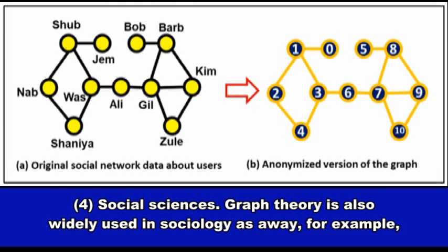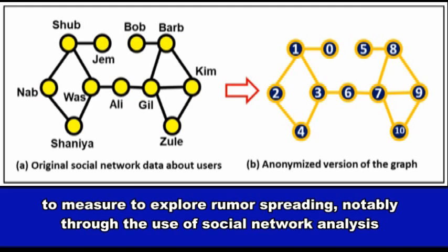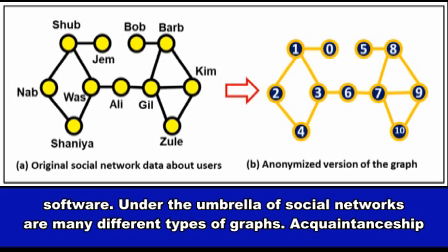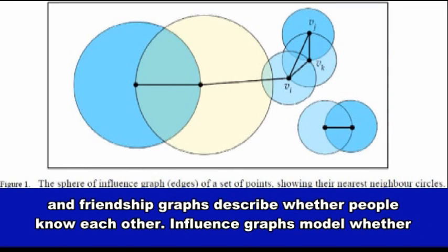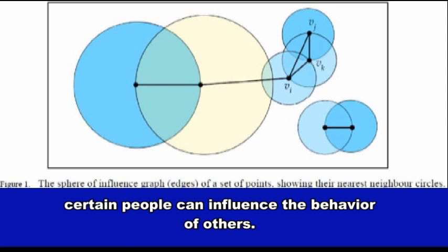Social Sciences: Graph theory is also widely used in sociology as a way, for example, to measure and explore rumor spreading, notably through the use of social network analysis software. Under the umbrella of social networks are many different types of graphs. Acquaintanceship and friendship graphs describe whether people know each other. Influence graphs model whether certain people can influence the behavior of others.